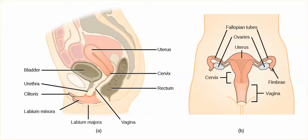Now let's switch back over to this figure and notice a couple of things. We're looking at a side view of the uterus here — we're not seeing the ovaries and the fallopian tubes within this view. Here we see the cervix, and then from the cervix we see the vagina, which is typically the point of deposition of sperm during ejaculation.